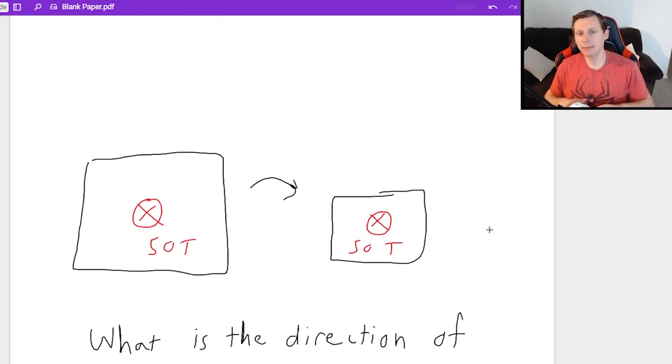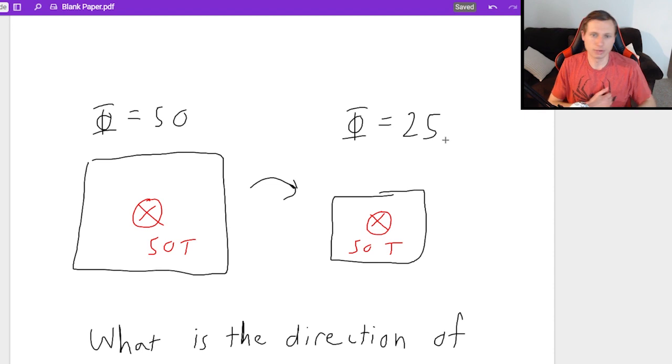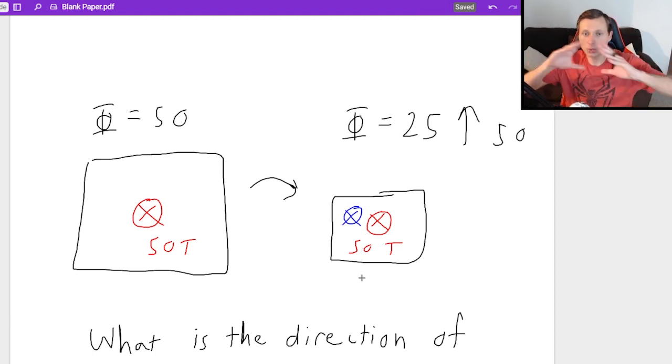And basically what that means is originally I had a nice big, whatever flux. We'll just say 50. It's not 50 because I don't know the area, but let's just say it's 50 for the sake of argument. Now let's say I cut this area in half, just making up a number here, just for the sake of example. And let's say the flux is now 25. I need to increase my flux to get it back up to 50. And the way I do that, this wire is going to create a B field going into the page. And why is that? Because the flux decreased going into the page. I need to increase it going into the page to get it back up to normal.